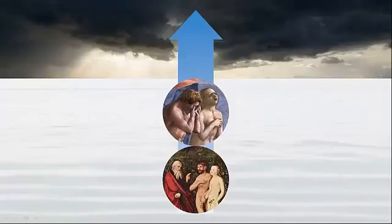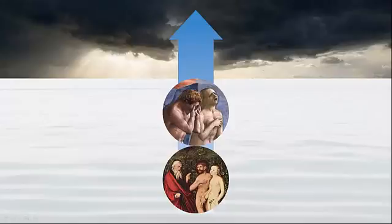Further evidence that the fruit was a symbol of sexual love is the fact that before Adam and Eve were cast out of the garden — before they ate the fruit — they were naked with no shame. After they ate, they covered their lower parts, their sexual organs. Why would they do that? Obviously, they were ashamed of what they had done with their sexual organs, which means they committed a sexual sin.